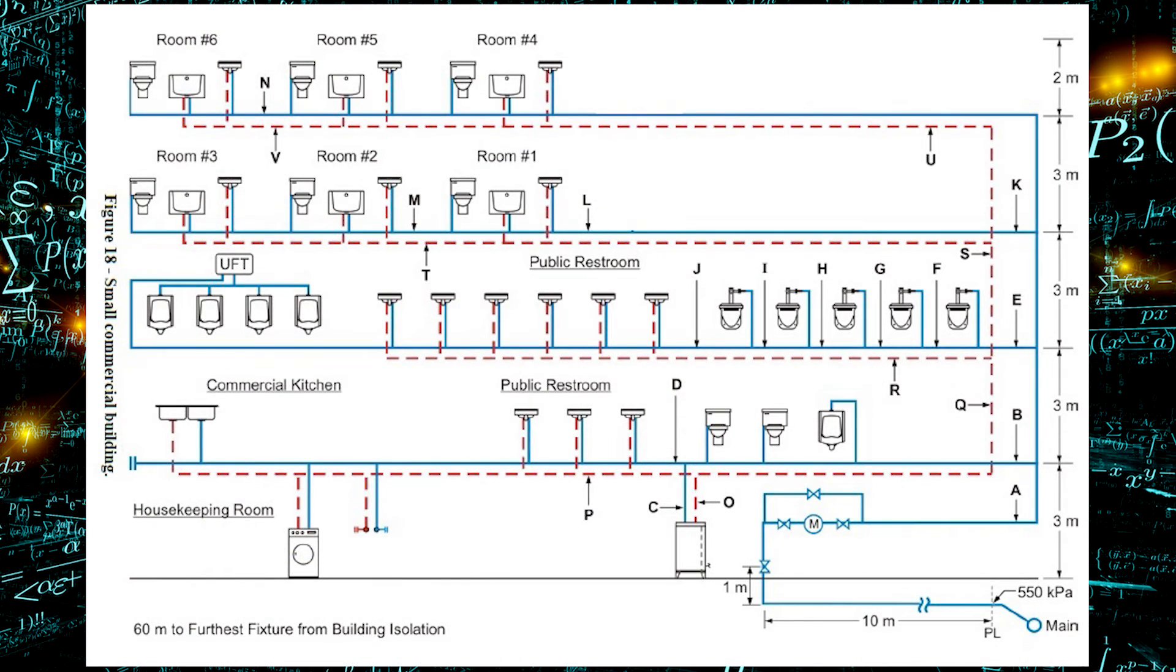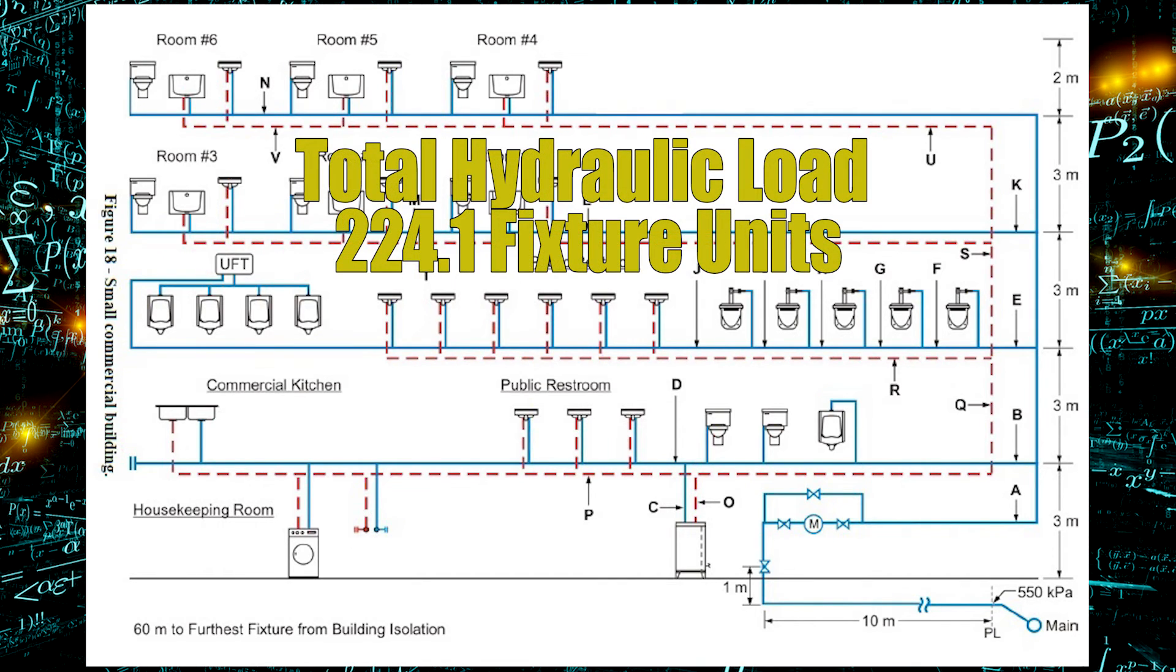We get to add them all up, every single one including the three hose bibs that are down in the basement. One of those hose bibs is hot only. When we size up the water service pipe we need to size in the hot only fixtures as well which would include that hose bib or dishwasher. You will get 224.1 fixture units if you've added it up correctly. Don't forget that one urinal on the first floor that is a flush valve urinal.